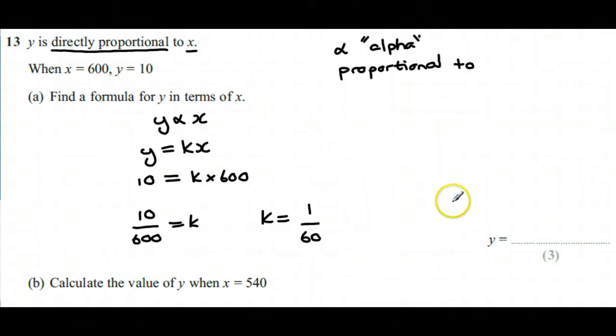So that means, if we put k back into our equation, that means that y is equal to 1/60 of x. Or alternatively, it could be written as x over 60.